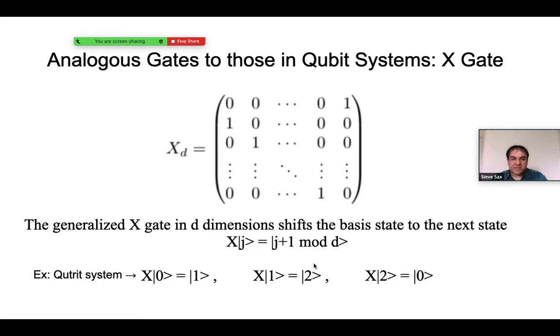The generalization of the X gate is really a shift gate. When it's applied to a given state, it advances it to the next state modulo d. Just to give an example, let's look at a Qutrit system where d equals 3. There's three states, 0, 1, and 2. X applied to the 0 state gives you the 1 state. X applied to the 1 state gives the 2 state. And X applied to the 2 state cycles back to the 0 state.